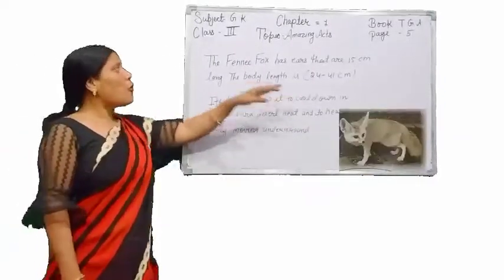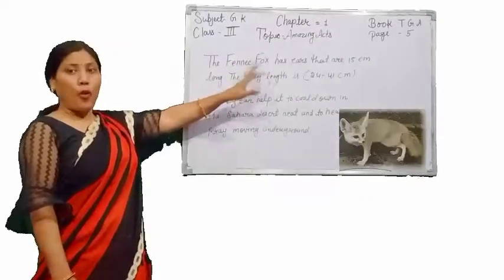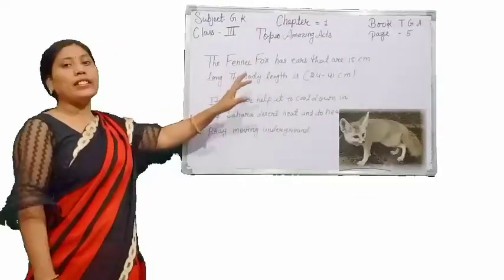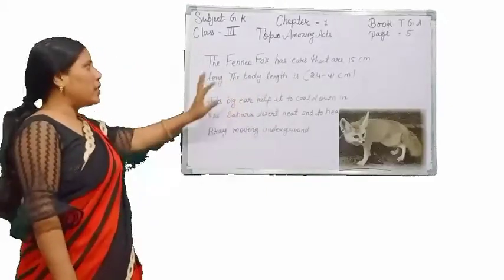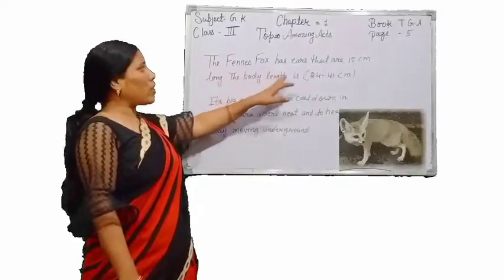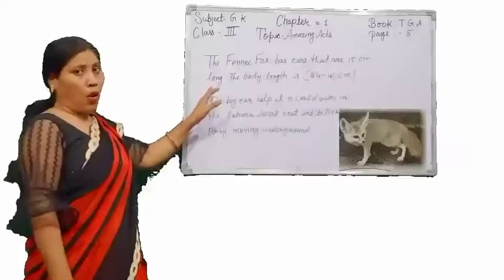Here you see the picture of a Fennec fox. It is a special type of fox, but its body is like a cat. It is small in size. The Fennec fox has ears that are 15 centimeters long.